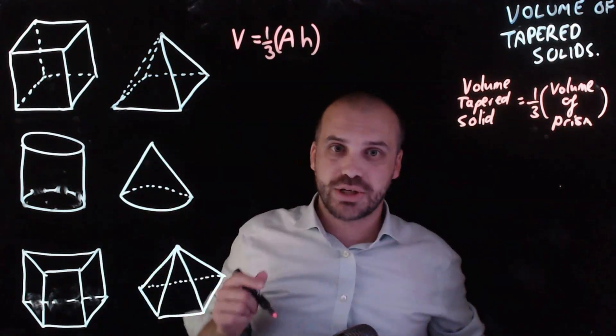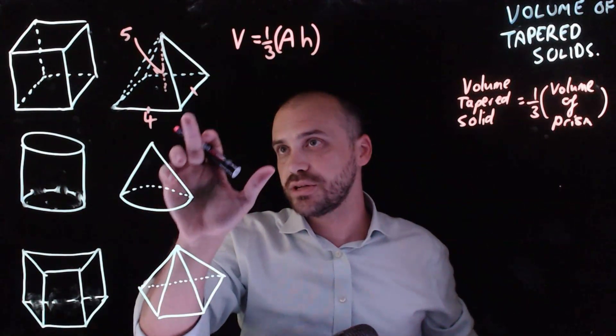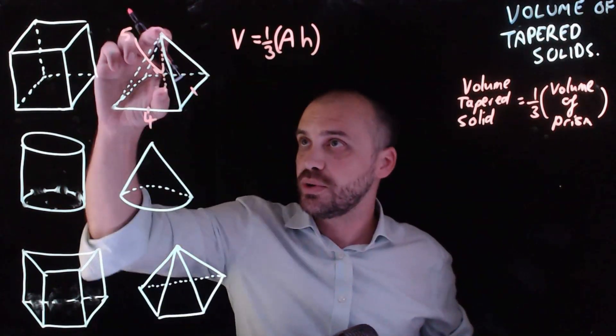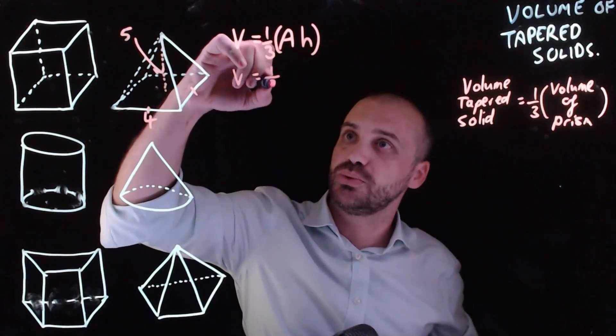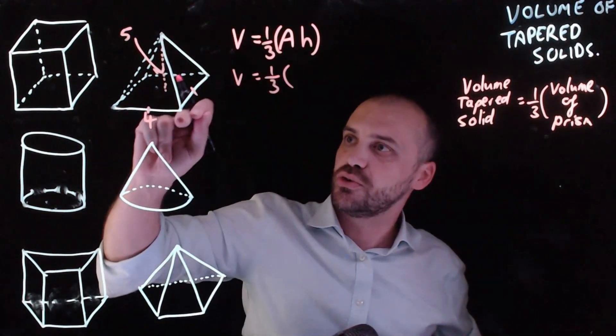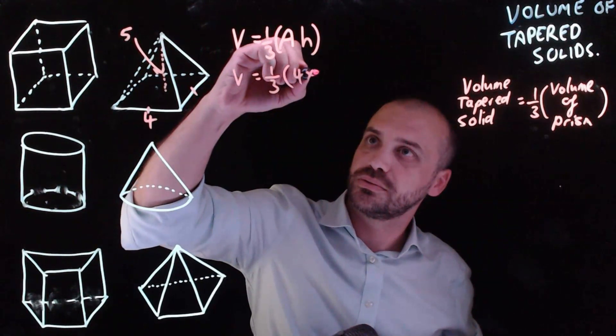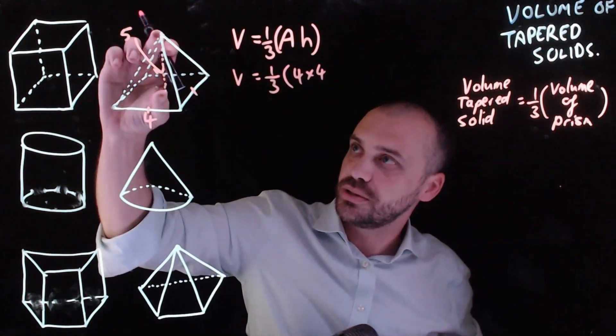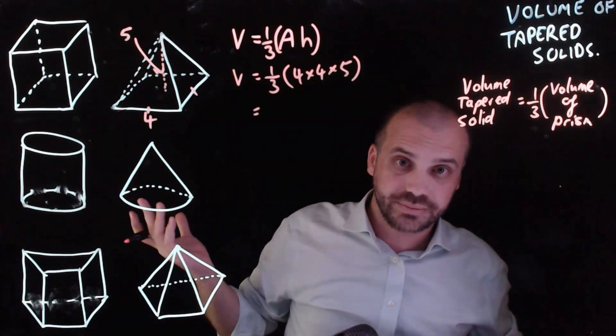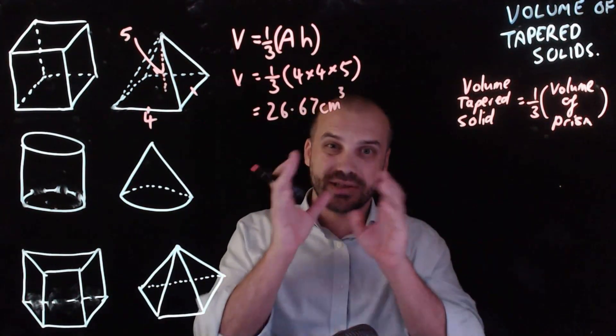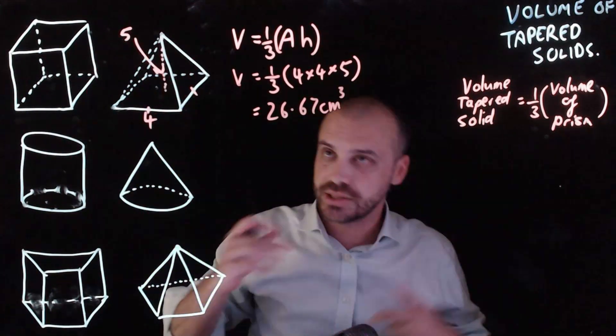Let's put some dimensions on it. So it's four centimeters by four centimeters with a height of five centimeters. So the volume is going to be equal to one-third, four times four, times the height, times five. And then calculator, 26.67 centimeters cubed.